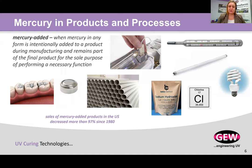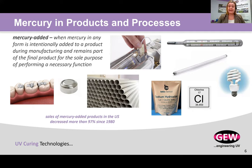Mercury-added products refer to any product where mercury in any form is intentionally added during the manufacturing process, and that mercury remains part of the final product for the sole purpose of performing a necessary function. Examples are dental amalgam, button cell batteries, mercury vapor lamps, thermometers, fluorescent tube lamps, and compact fluorescents. Since 1980, when it became more clear that mercury was toxic, the EPA cites that in the US 97% of our mercury-added products have been eliminated. The remaining 3% are a lot more challenging to find alternatives to.